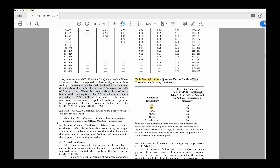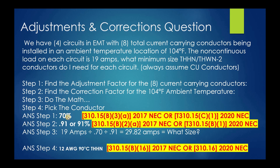We have eight current-carrying conductors, so we come down to the seven-to-nine range in that table, and that gives us 70%. Convert that to a decimal by moving two places left: 0.70. That 70% value comes from Table 310.15(B)(3)(a) in the 2017 code. In the 2020 code, that changes to Table 310.15(C)(1) — just a heads up, it flows much better in the 2020 code, but it still works the same way.